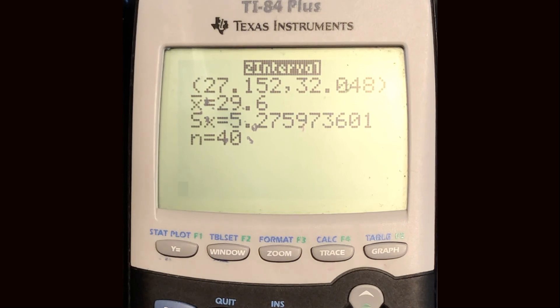That's our confidence interval. It matches what we had. So it says that we are 95% confident that the population mean of hours worked is between 27.152 to 32.048.